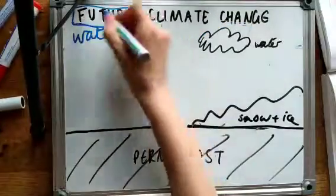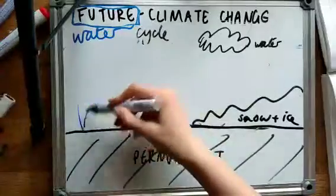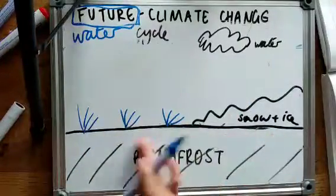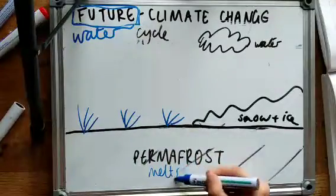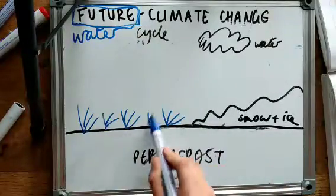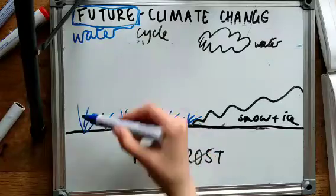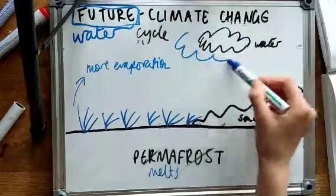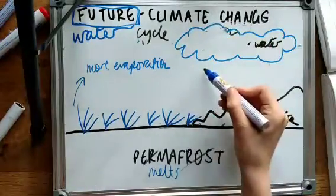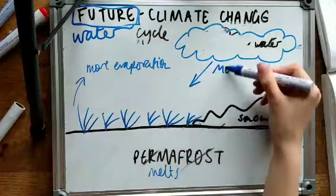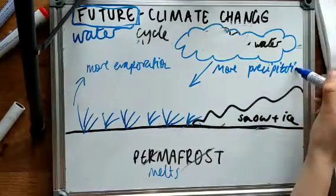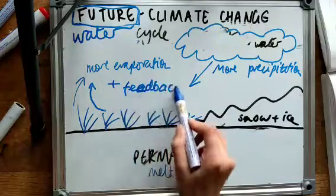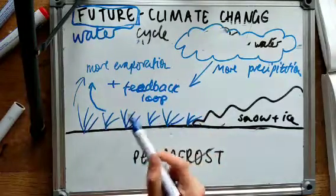Moving on to the water cycle, currently a lot of water is stored in permafrost and snow and ice, but as permafrost melts, this means that more plants can grow. This results in more evapotranspiration, which provides more water for the atmospheric store of water, which results in more precipitation. This can be viewed as a positive feedback loop, because more precipitation results in more plants growing, and thus more evaporation.